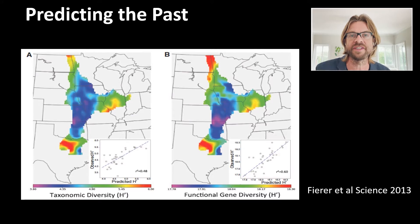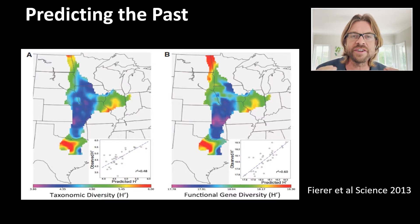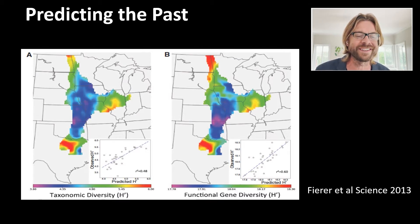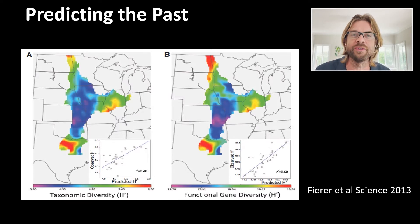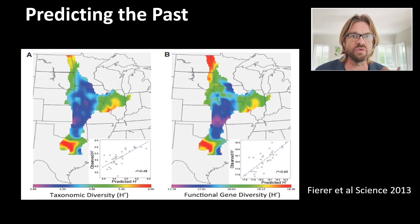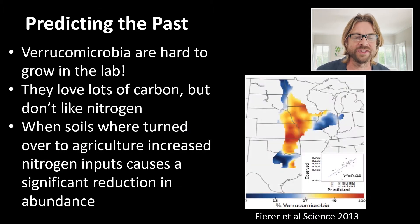Here on the left I have taxonomic diversity across what would have been the range of the Great Prairie, and on the right I have functional gene diversity. The first thing you can take away is that in the centre of that range, we have very low taxonomic and functional diversity. What this suggests is that we have essentially a monoculture of prairie grasses associated with a very small group of bacterial symbionts, which are uniquely associated with those prairie grasses. Digging down into that, we can start to explore who those bacterial types are.